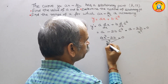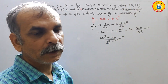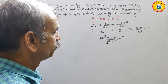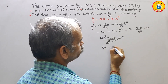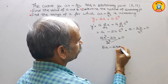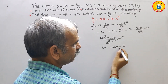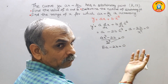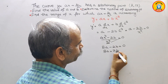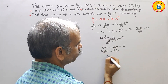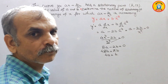Substituting x equals 2, we get 8a minus 2b equals 0. Bringing 2b to the other side: 8a equals 2b. Dividing both sides by 4, we get 4a equals b. So we have found that b equals 4a.